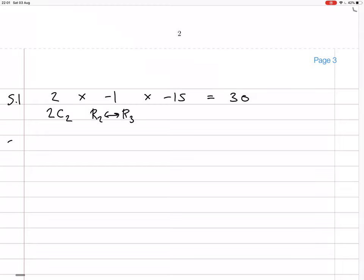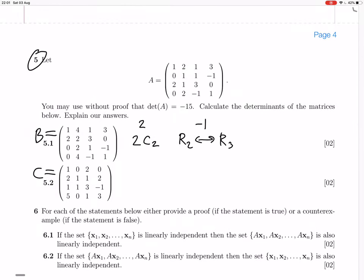Okay, 5.2. Okay, 1, 2, 1, 5, 0, 1, 1, 0. Ooh, is this a transpose? Have we transposed A?